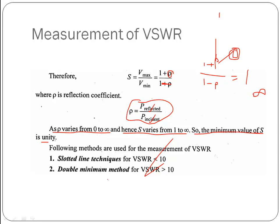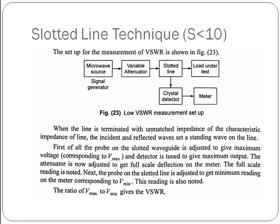The following methods are used to measure VSWR in a microwave transmission line. The first method is the slotted line technique, used to calculate VSWR values less than 10. If the value of VSWR is greater than 10, we use the second method — the double minimum method. Depending on the value of SWR, the technique differs: for low VSWR values we prefer the slotted line technique. This is the block diagram and general bench setup for the slotted line technique to measure small values of VSWR.